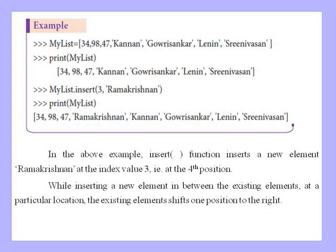Now we check the output. The original list shows 34, 98, 47 and the string elements. After calling mylist.insert(3, 'Ramakrishnan'), the name 'Ramakrishnan' is added at the fourth position, that is index value 3. While inserting a new element in between existing elements at a particular location, the existing elements shift one position to the right.